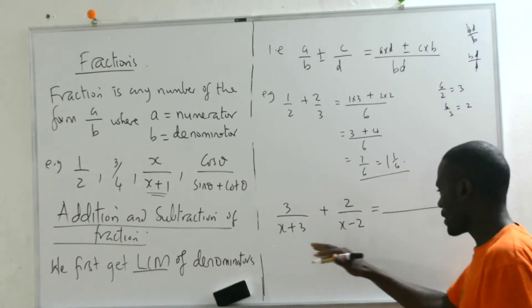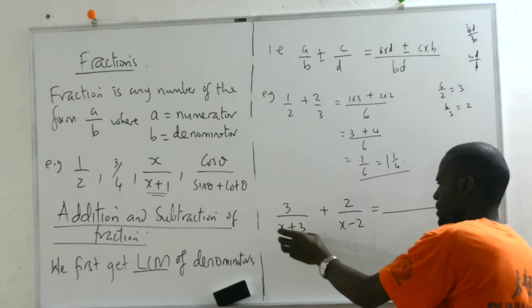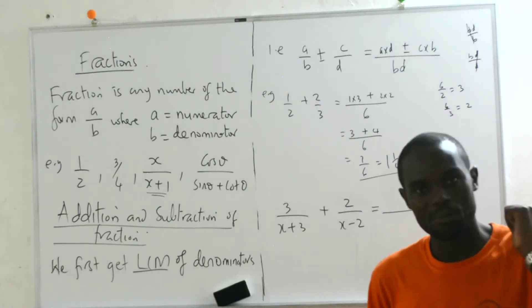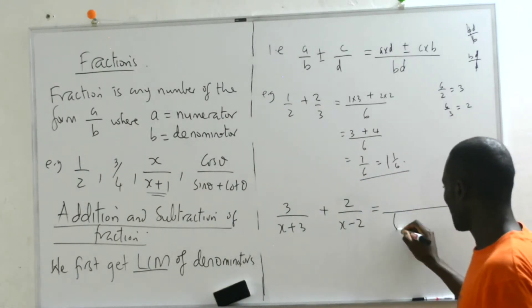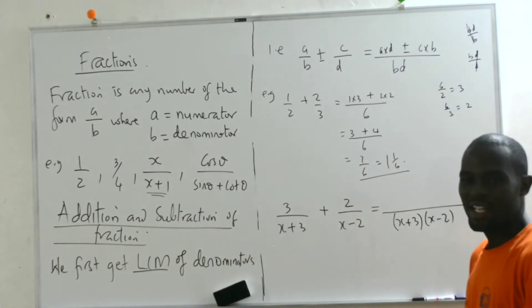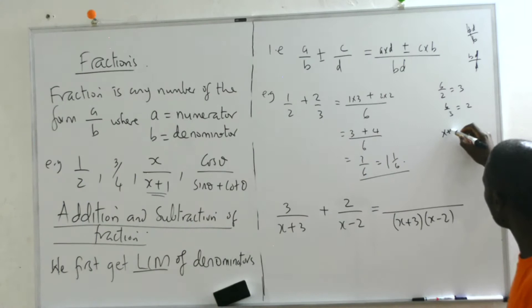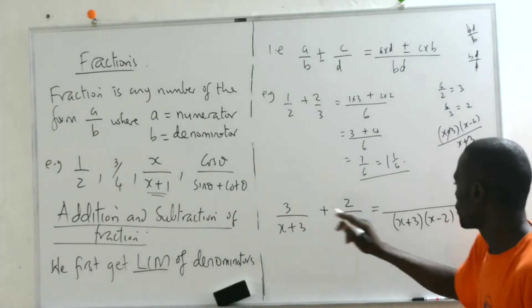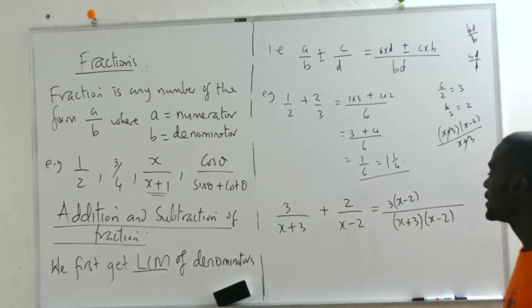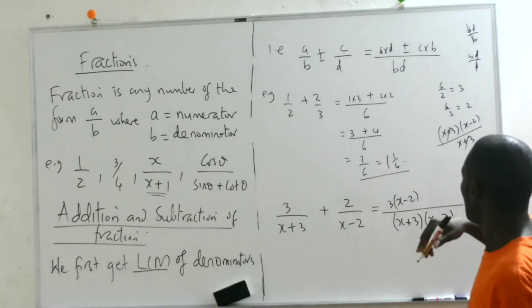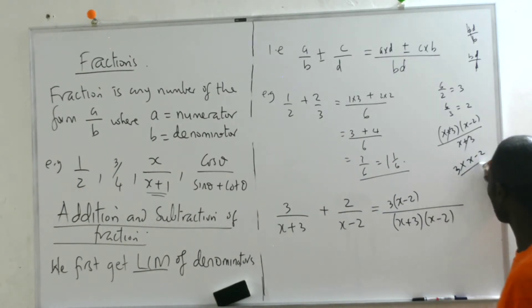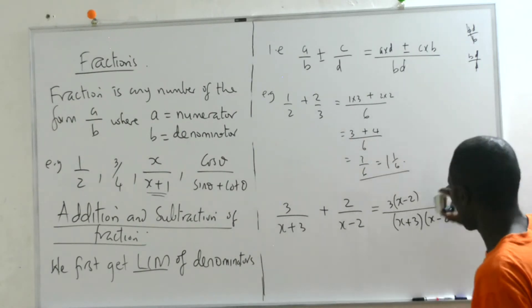The LCM here is 6. 6 divided by 2 we get 3, so we get 1 times 3. Plus 6 divided by 3 we get 2, so we have 2 times 2, which will be 3 plus 4 over 6, which is 7 over 6, which is 1 and 1 over 6. This one is known.